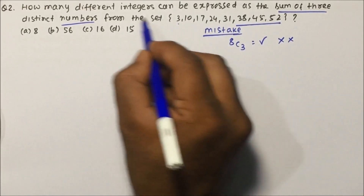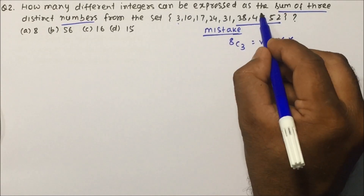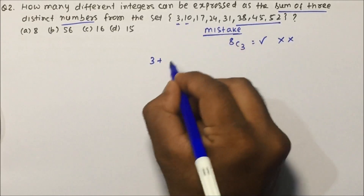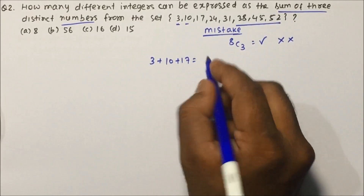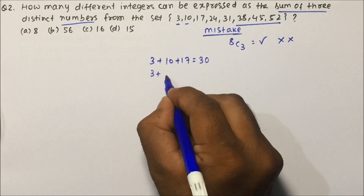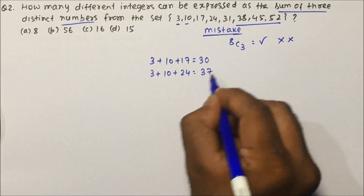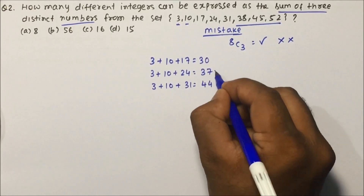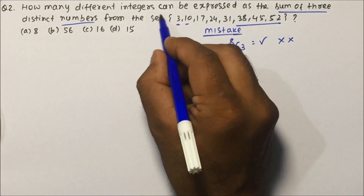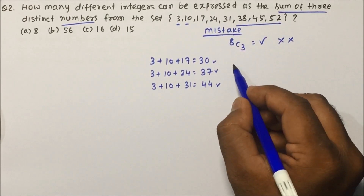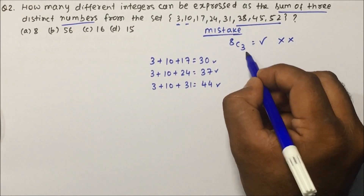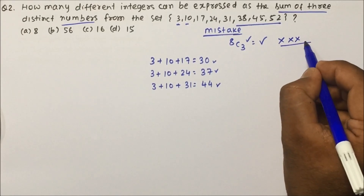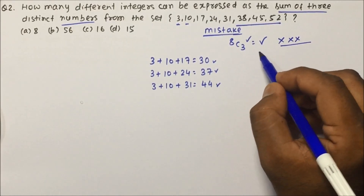The question asks how many different integers you can get after adding three distinct numbers. For example, 3 + 10 + 17 = 30, then 3 + 10 + 24 = 37, then 3 + 10 + 31 = 44, and so on. We are not simply selecting three numbers out of eight — we are counting how many different integer results are possible. Don't calculate the combination.